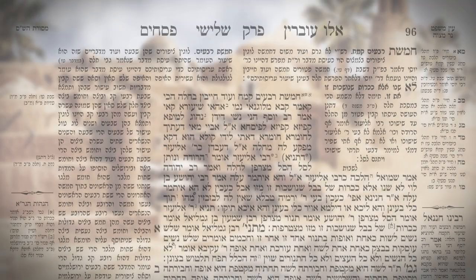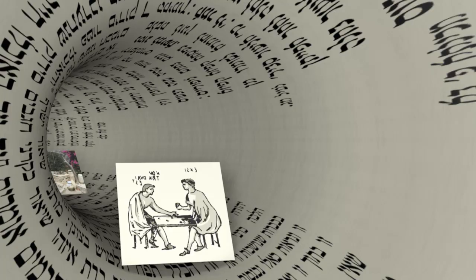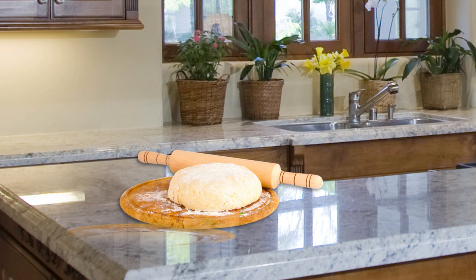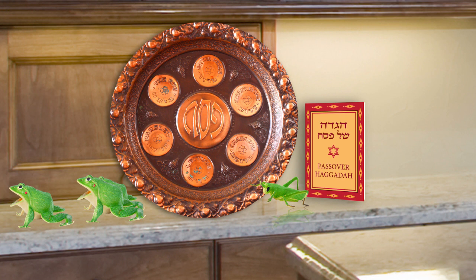The Talmud is filled with thousands of words, stories, and concepts that perplex even experienced students. For example, a passage in Tractate Psachim compares unbaked dough with the antennae of a locust. What do locusts have to do with Passover? It's not what you think.